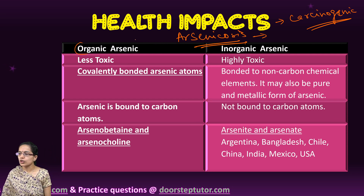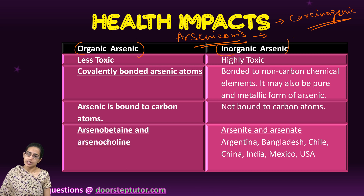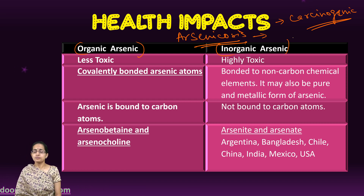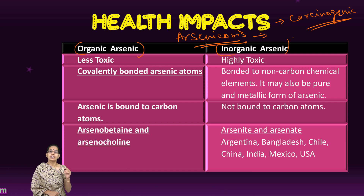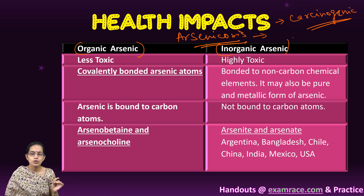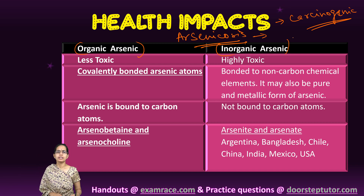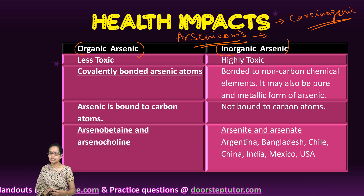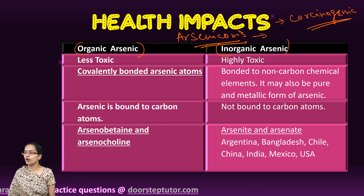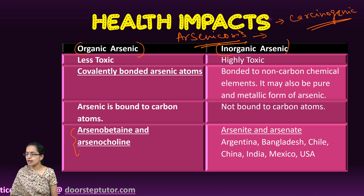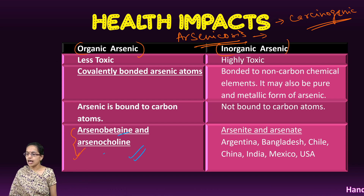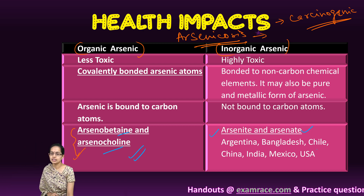Regarding organic versus inorganic arsenic — inorganic arsenic is in a pure or metallic state, not bonded to carbon, and is therefore much more toxic. Organic arsenic is covalently bonded with carbon, meaning the arsenic atoms are shared, making it less toxic. Examples of organic arsenic include arsenobetaine and arsenocholine, whereas arsenite and arsenate are examples of inorganic arsenic.